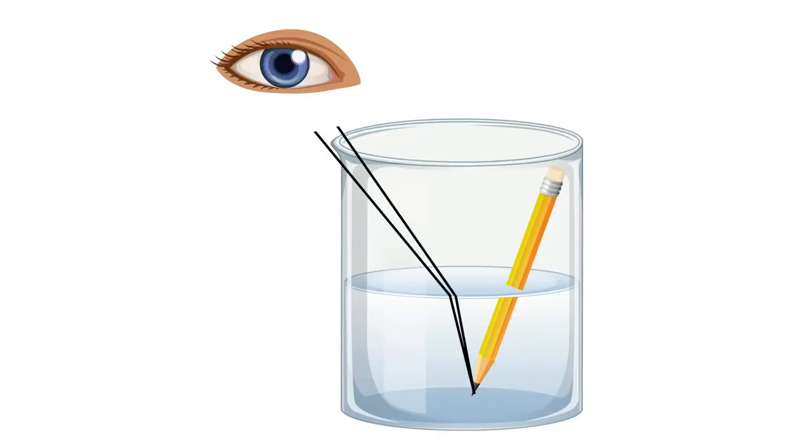The light travelling from the pencil refracts as it leaves the water. When the light enters our eyes, our brain thinks the light has travelled in a straight line, and we see the pencil in a different position to the actual position. It appears bent.